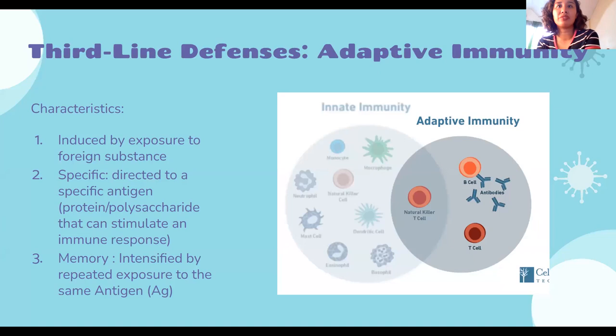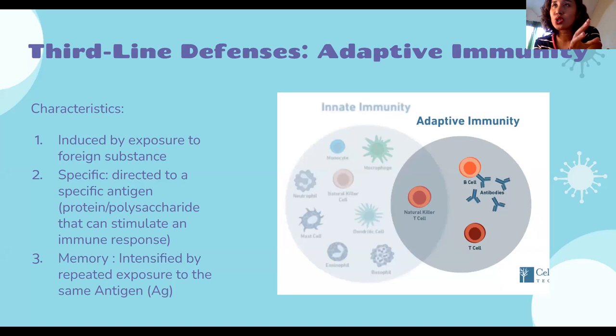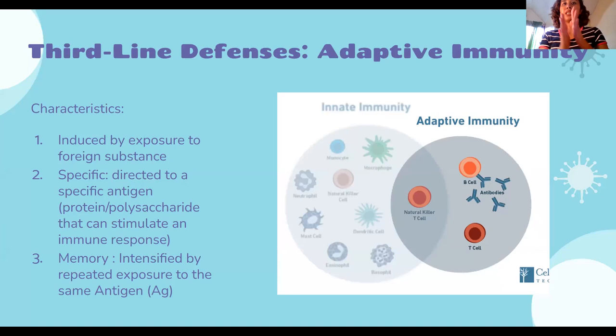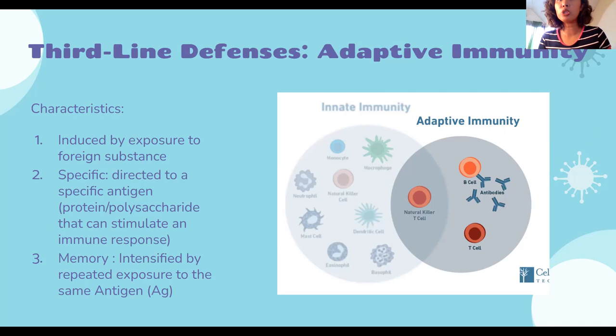We are now in our third line of defense — adaptive immunity. We're finished with innate immunity. The first line consisted of anatomic, chemical, and physiological barriers. The second line consisted of cells and non-cellular substances like the complement system, coagulation system, and inflammatory response. Now, adaptive immunity. Natural killer cells and macrophages also participate in adaptive immunity.